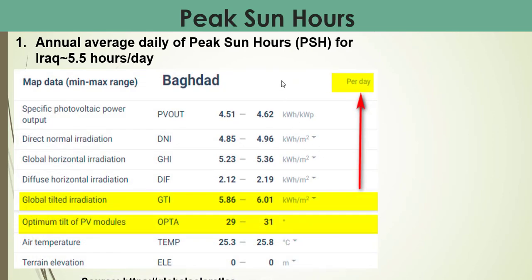Under the first section, how we choose the peak sun hours — as we discussed in past lectures, the annual average daily peak sun hours for Iraq is about 5.5 hours per day. If we take a look at this table, we see the data of the selected site, our case study in Baghdad city, including the specific photovoltaic power output, the direct normal radiation (DNI), and global horizontal radiation.